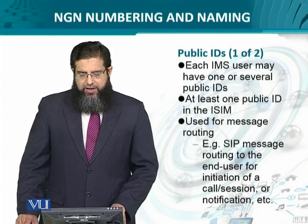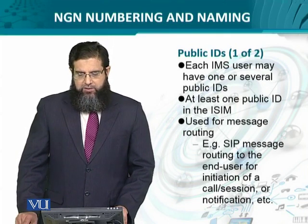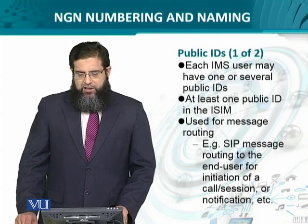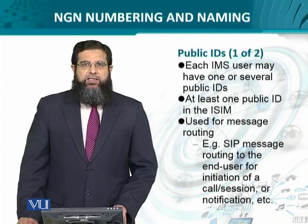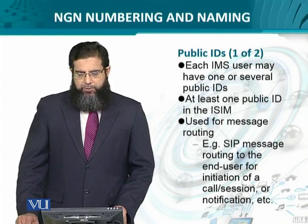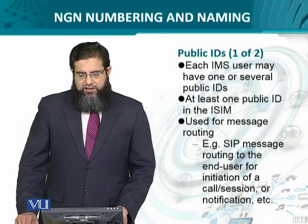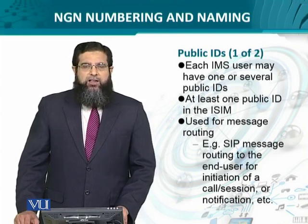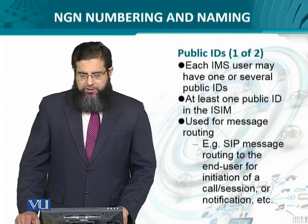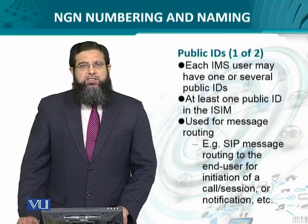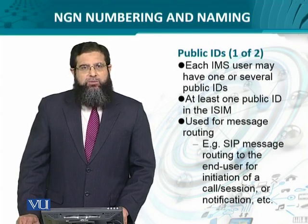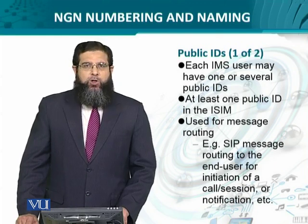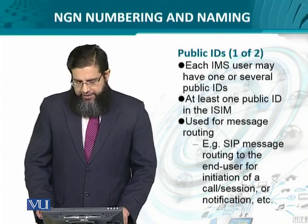The next identifier is the public ID. Similar to the private ID, each IMS user may also have one or several public IDs. The difference between public ID and the private ID is that the public ID is used for routing and forwarding the messages to that particular user. For instance, if the SIP message is to be routed to the end user for call establishment, call forwarding, and for any other important notification, then the public ID is utilized.